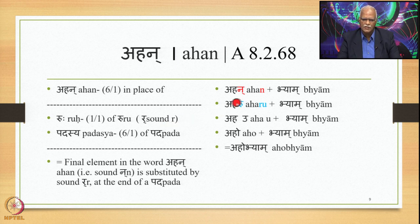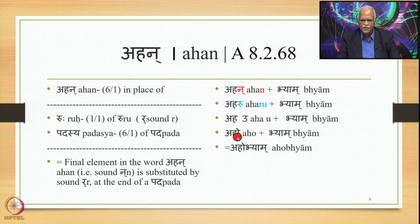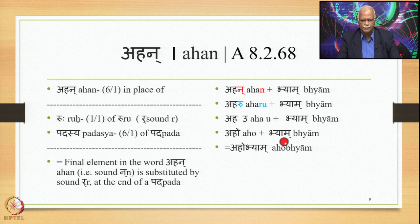So in Ahan plus Bhyam: Na comes at the end of the Pada, is substituted by Ro, then Ro is substituted by U, giving Ahu Bhyam. Then this A and U undergo Gunasandhi that replaces both these vowels, so we get Aho Bhyam as the derived form.